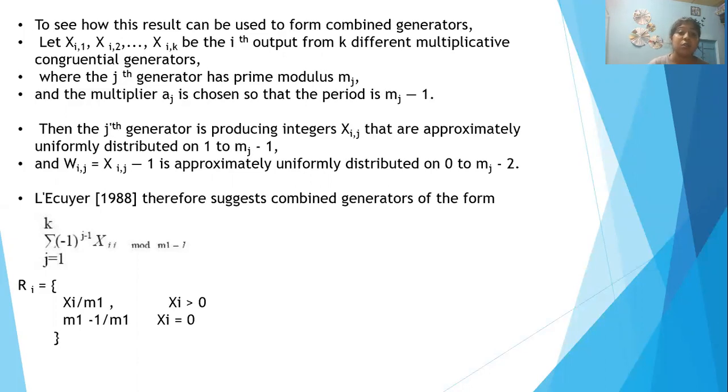L'Ecuyer also suggests the combined model: summation of j equals 1 to k, minus 1 to the power j minus 1, times X_i,j, modulus m_i minus 1.